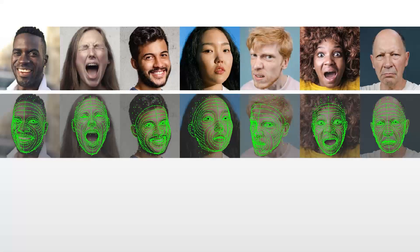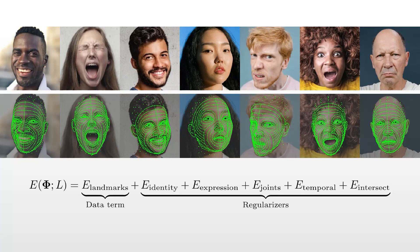As you can see here, our dense landmarks provide a rich signal for both identity and expression. We fit our 3D face model to these landmarks, minimizing the following energy. The only data term used is e-landmarks, encouraging the re-projected model landmarks to explain our predicted dense landmarks. The other terms use prior knowledge to regularize the fit.